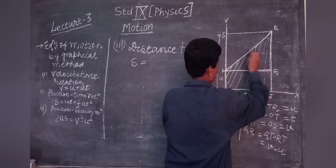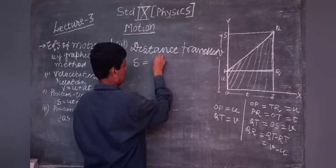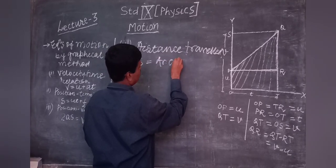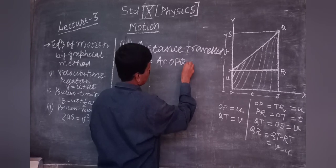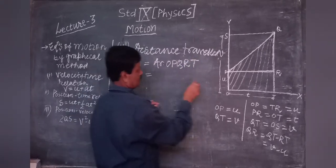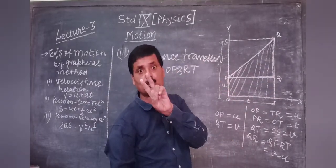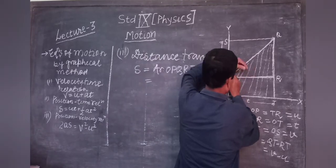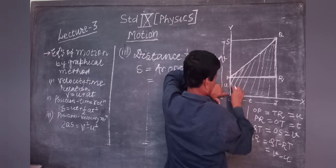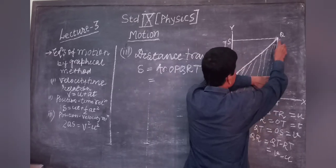The area of trapezium OPQRT can be divided into two parts. Area of rectangle OPRT plus area of triangle PQR.